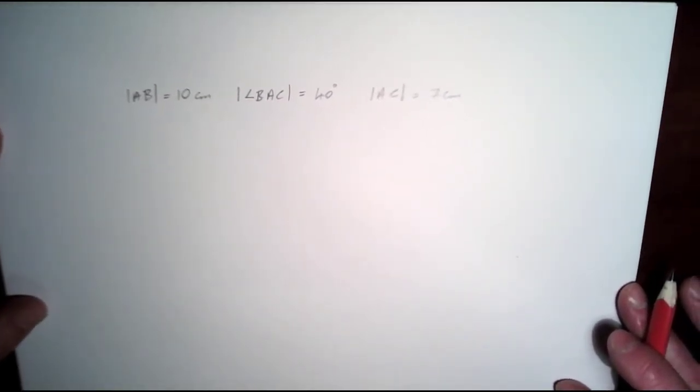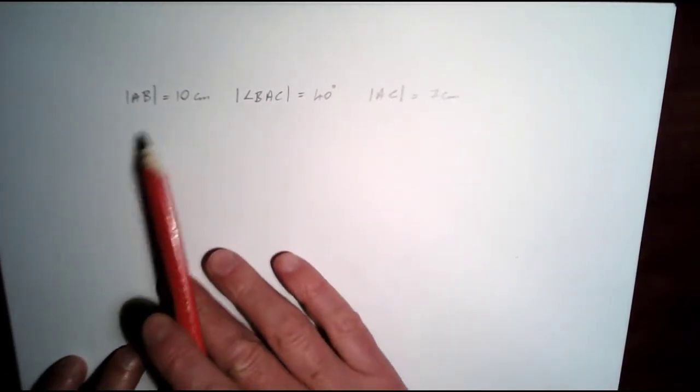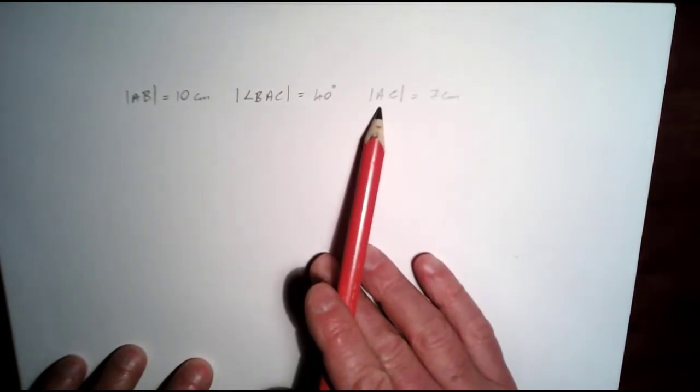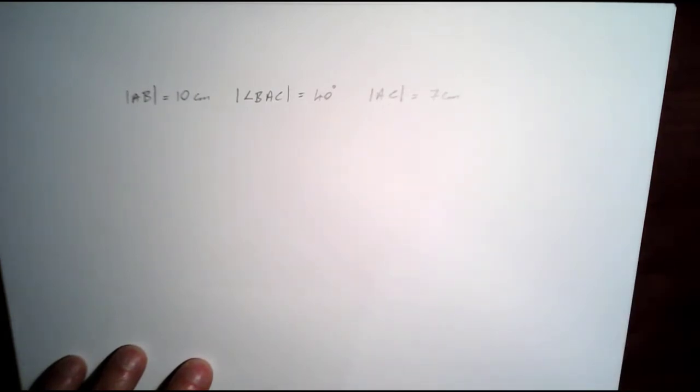Okay, so in this video I'm going to have a look at drawing another triangle. This time the dimensions are AB 10 centimeters, the angle BAC is 40 degrees, and the side AC is 7 centimeters.